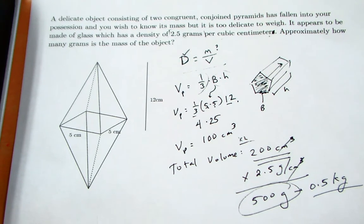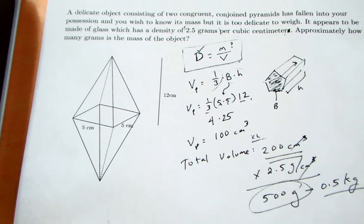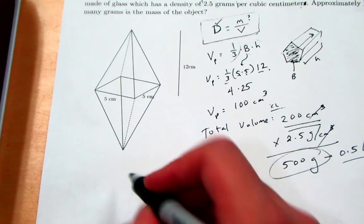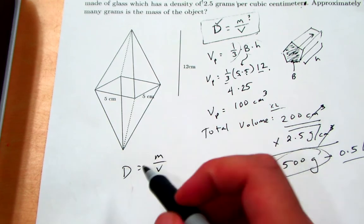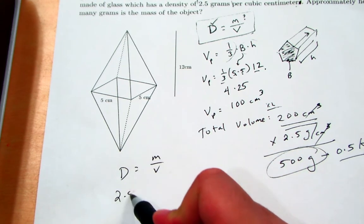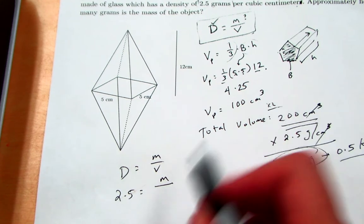Now, if you are a fan of using formulas, if that's something that you take from your science class, then just to show you the procedure there, you could instead say that density equals mass divided by volume. The density was given to us as two and a half. The mass we don't know. The volume we just found to be 200 as the total.